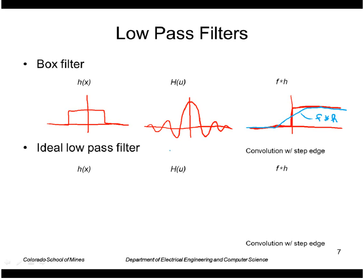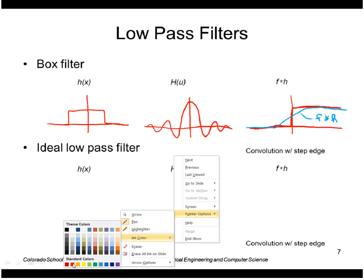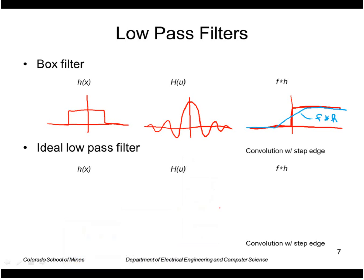An ideal low-pass filter does attenuate high frequencies to zero. An ideal low-pass filter in the frequency domain is basically a box or rectangle. Past a certain point it zeroes out the high frequencies. Since these are Fourier pairs, the inverse Fourier transform of this box filter would be a sinc function.